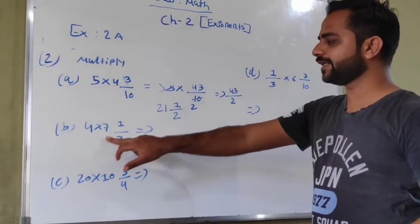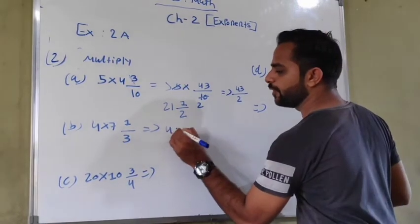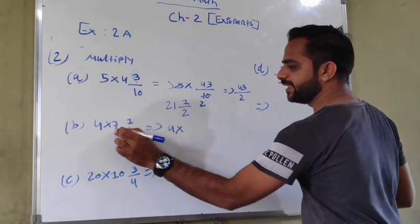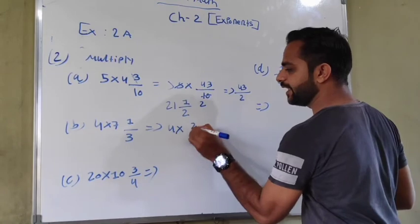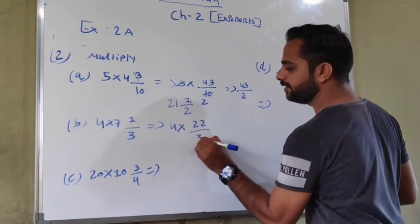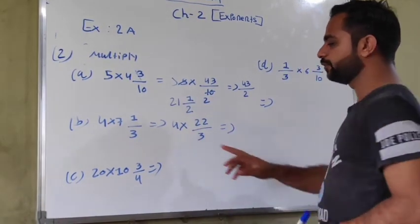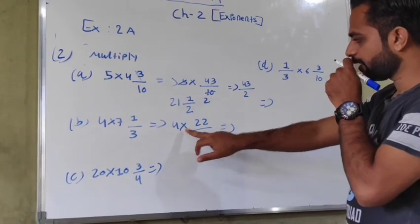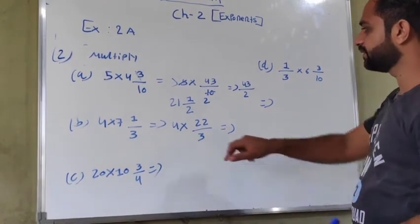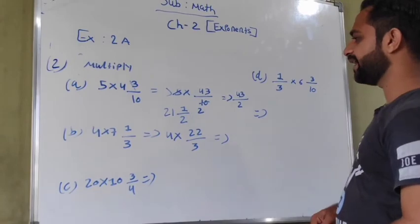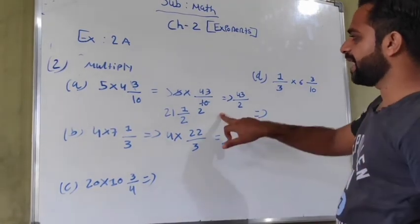Next is 4 multiply by 7 and 4 upon 3. 7 times 3 is 21 plus 4 is 25 upon 3. Now 4 multiply by 25 upon 3.